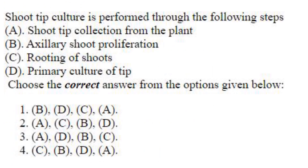Shoot tip culture is performed through the following steps. First will be shoot tip collection from the plant, A. Then primary culture of the tip, D. Then axillary shoot proliferation, B. And finally rooting of the shoots, C. So the sequence is A, D, B, C. Answer is option 3.